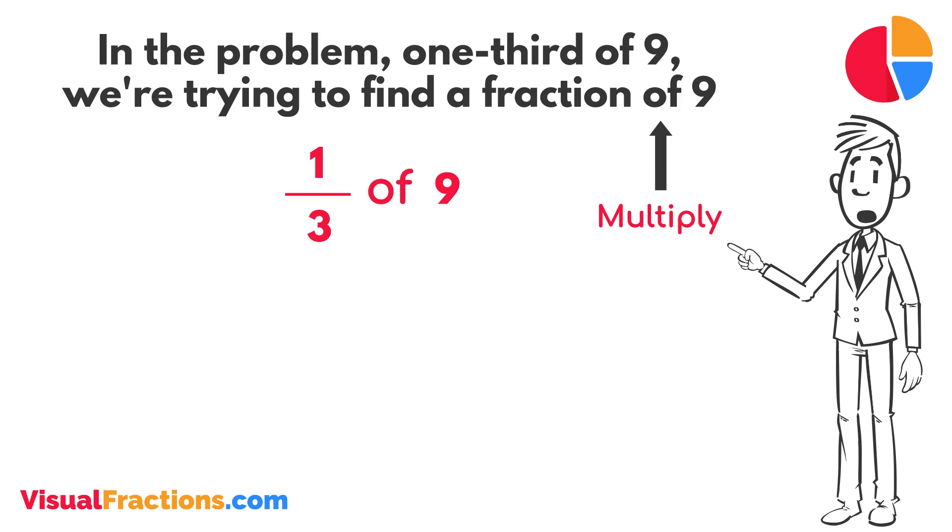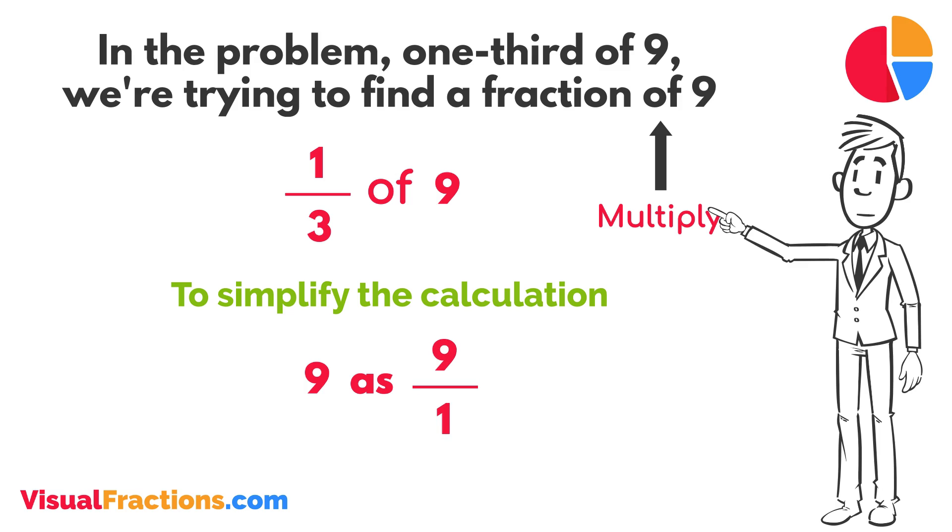To simplify the calculation, we first convert our whole number into fraction form, writing nine as nine over one. This transformation makes it easier to work with our numbers as fractions.